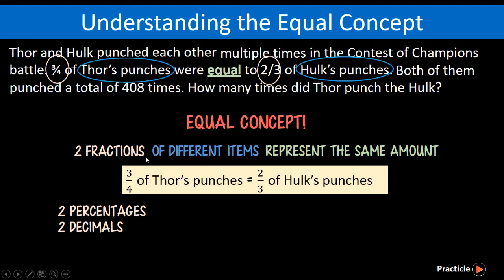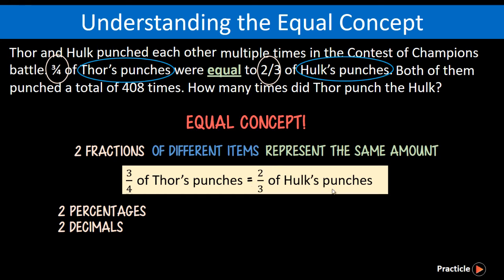So instead of 3 quarters and 2 thirds, we can say something like 20% of Thor's punches equals 60% of Hork's punches, or in the case of decimals, 0.5 of the nuggets is equal to 0.8 of perhaps hot dogs. Whenever you are given how much of item 1 is equal to how much of item 2, the question is testing if you know how to use the Equal Concept.